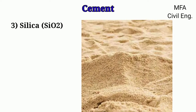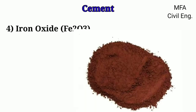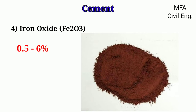Cement contains silica about 17 to 25 percent. It increases the strength of cement by forming a gel, and it also increases the setting time of cement. Iron oxide is available in cement about 0.5 to 6 percent.